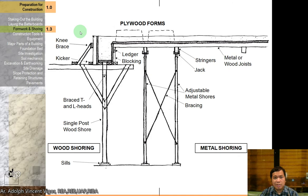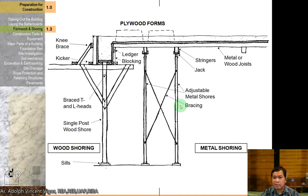Forms take the shape of the structure being cast. Components include knee braces, key and L-heads, and wood or metal shoring. You have adjustable metal shores and bracing, the stringer or jack, metal or wood joists, and the sills.